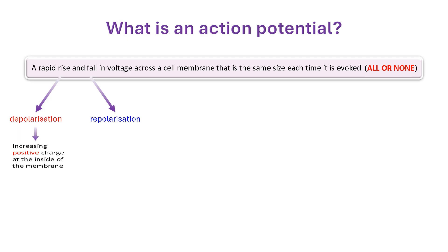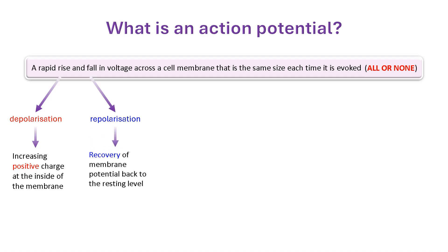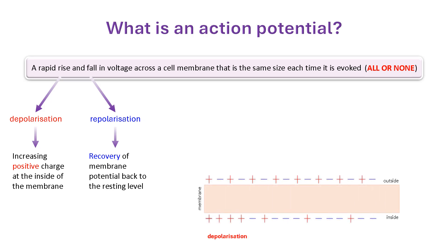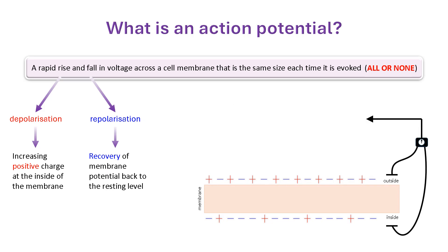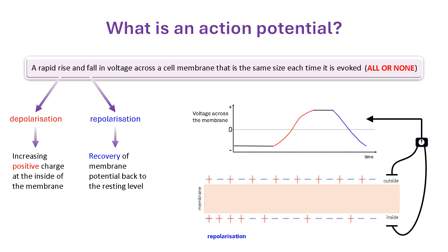Depolarisation is defined as an increase of positive charge at the inner surface of the cell membrane. Repolarisation is the recovery of the membrane voltage, or membrane potential, back to its original value. This animation starts with the inner surface of a membrane having more negative charge than the outer surface — this is the normal situation in most cells of the body. The charge difference across the membrane can be recorded by placing an electrode on either side of the membrane and measuring the voltage difference across it. This is exactly how an action potential occurring at a cell membrane is recorded.